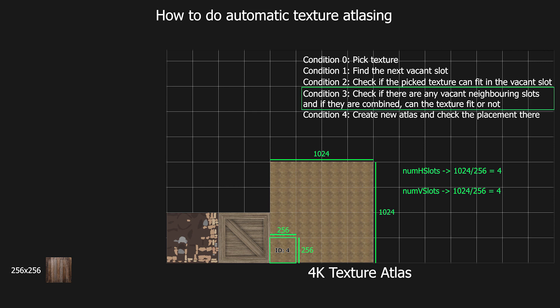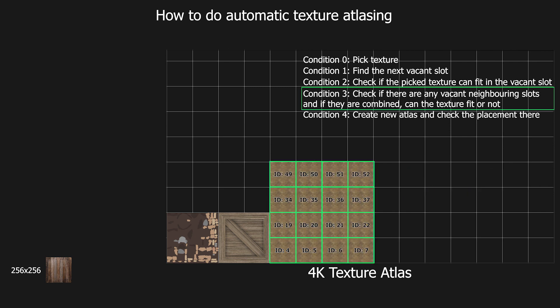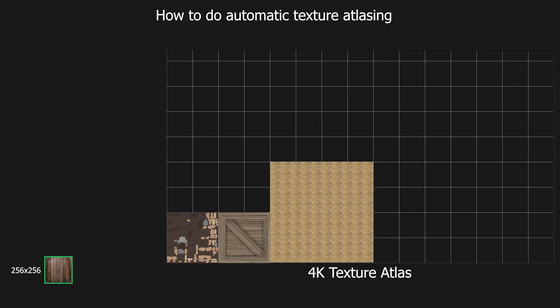Coming back to the neighboring slot searching part — after running those for loops, we find that slots with the following IDs are the neighboring slots which can be combined, and the third texture from the list will be placed in the atlas. The fourth texture can easily be placed at slot with ID 8, and since it is the same size as the slot it won't need any neighboring slots.